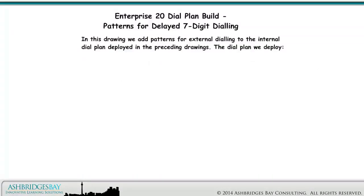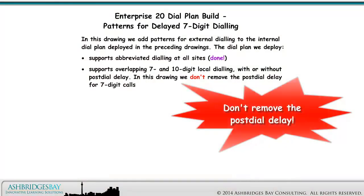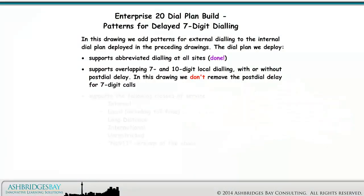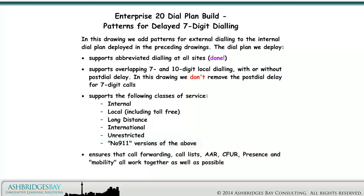In this drawing, we add patterns for external dialing to the internal dial plan deployed in the preceding drawings. The dial plan we deploy supports abbreviated dialing at all sites, supports overlapping 7 and 10-digit local dialing with or without post-dial delay — in this drawing we don't remove the post-dial delay for 7-digit calls — and supports the following classes of service: internal, local including toll-free, long distance, international, unrestricted, and no-911 versions of the above. It also ensures that call forwarding, call lists, AAR, CFIR, presence, and mobility all work together as well as possible.